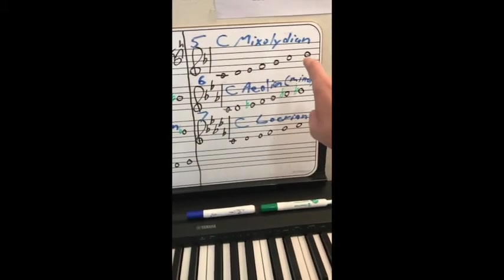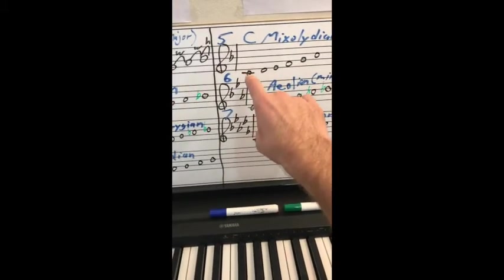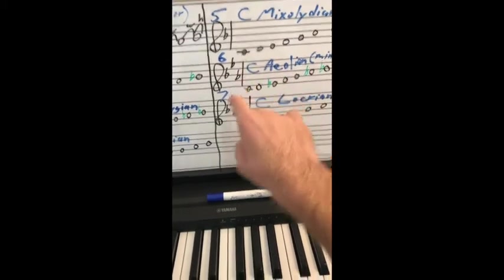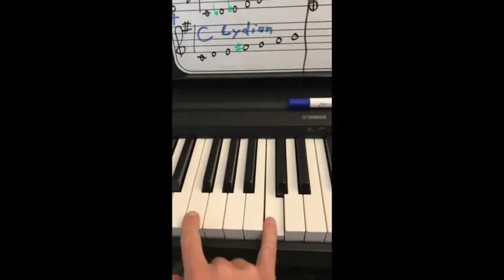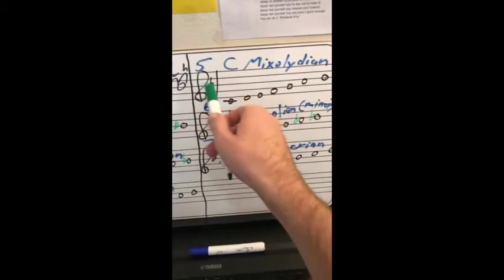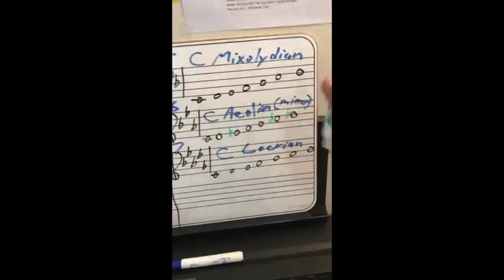Next, we have mixolydian. That means that it's the fifth mode. So, C is the fifth note of what major scale? Find C. It's down a fifth. F. C mixolydian comes from F major. F is the key of one flat, which is B flat. So, we write it in B flat.